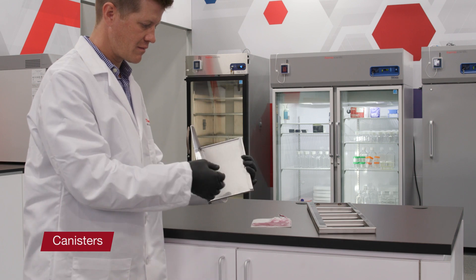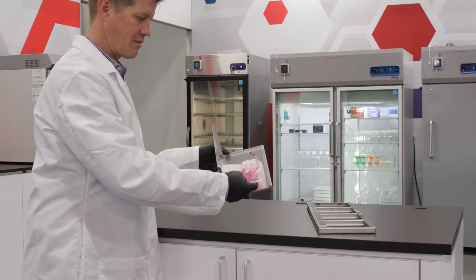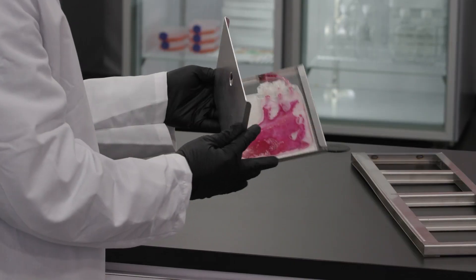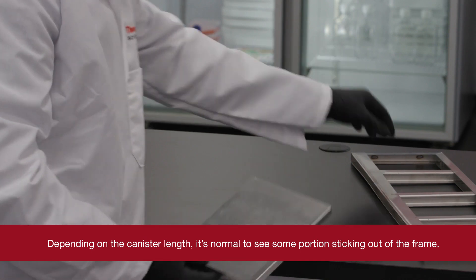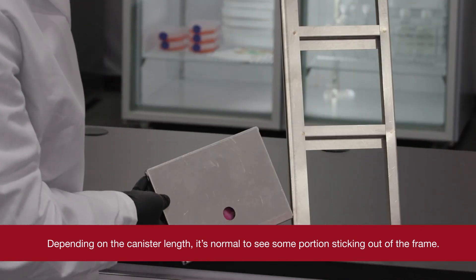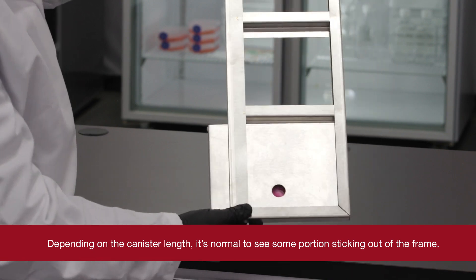An example of a storage bag and its arrangement within a canister will now be demonstrated to show you how the canister can help to keep the bag flat and contained. Once the bag is inserted and fixed within the canister, it can then be placed in a larger frame with other canisters to provide a high capacity organized storage format.